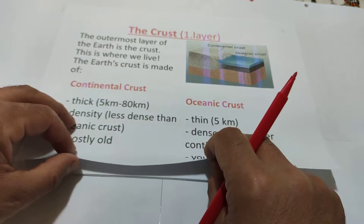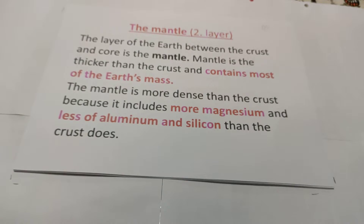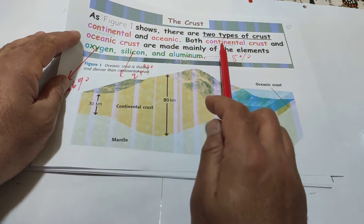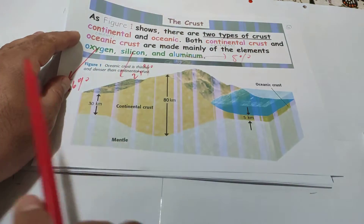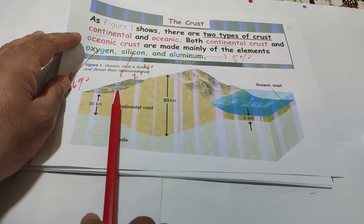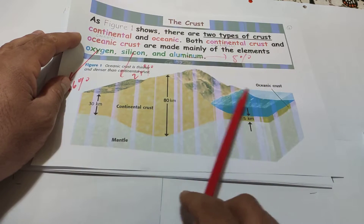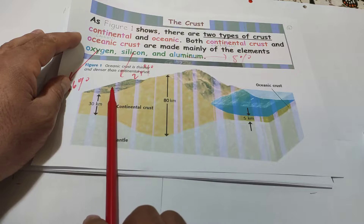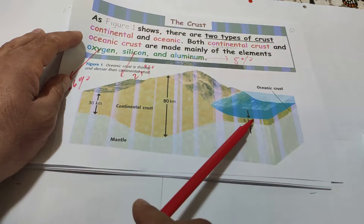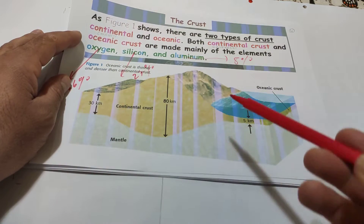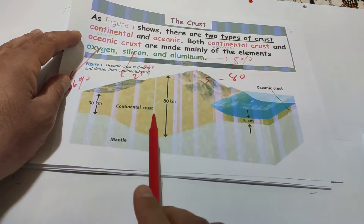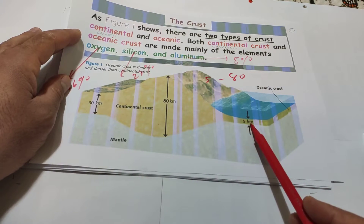The crust layer is made of two parts: continental crust and oceanic crust. Continental means land part, oceanic is the water part - two parts of the earth's surface or crust. The thickness ranges from 5 km up to 80 km. The highest point is 80 km and the thinnest part is 5 km.